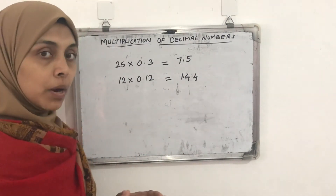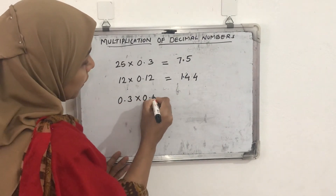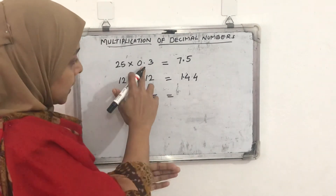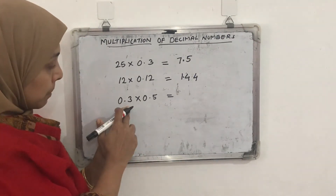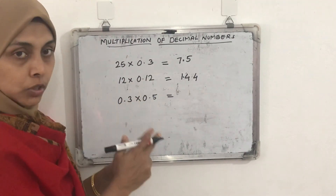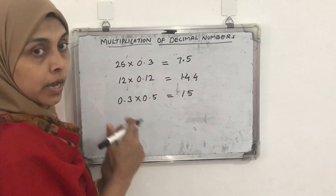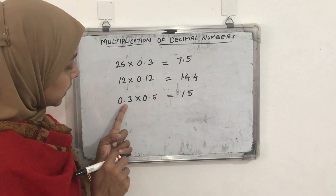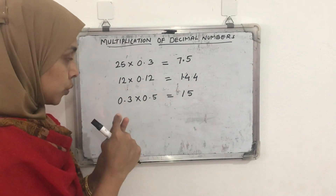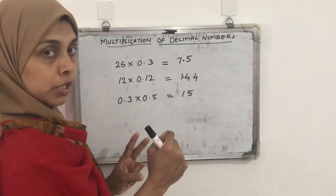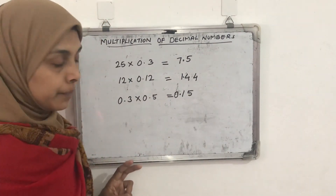Another case is when we multiply two decimal numbers together. Example: 0.3 × 0.5. We multiply ignoring the decimal points — 3 × 5 = 15. Then count the total decimal places in both numbers: 0.3 has one decimal place and 0.5 has one decimal place, giving a total of 2. So the product needs 2 decimal places: the answer is 0.15.